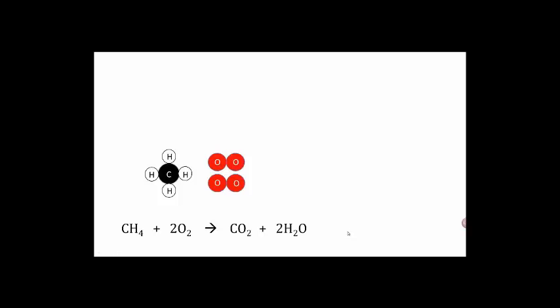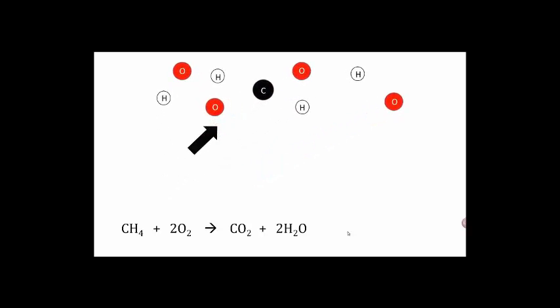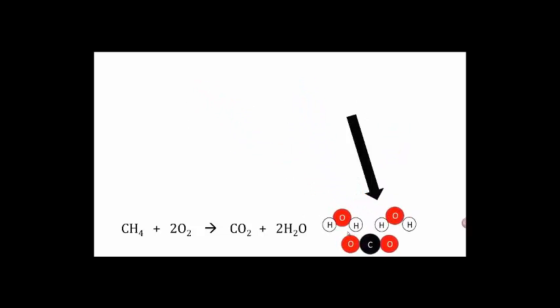In order for this reaction to give us the products that it does, we first need to break the chemical bonds in the reactants and then we'll get the products as those bonds form anew. We can see that we get our products and they're different from our reactants because the bonds form in a different way after they've been broken initially.